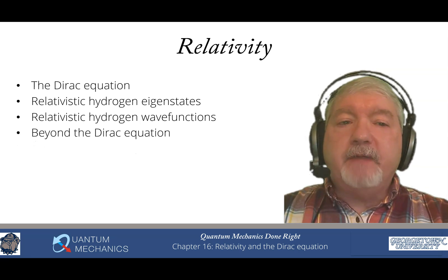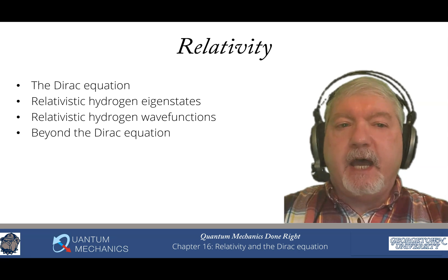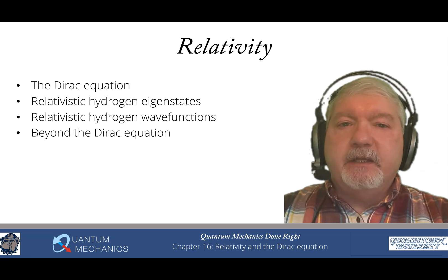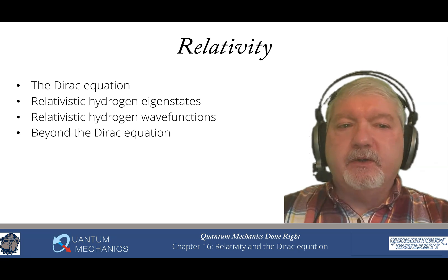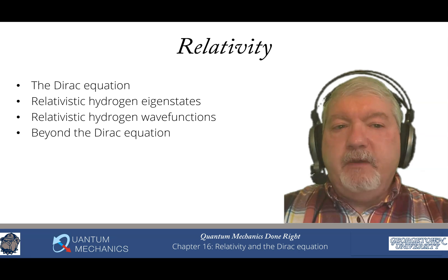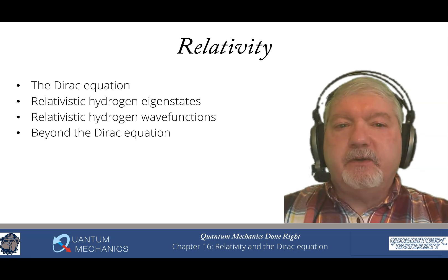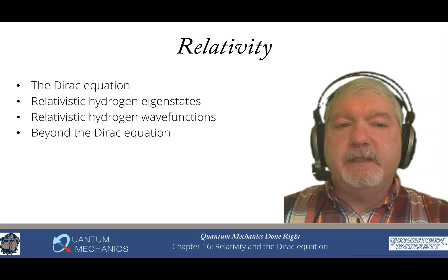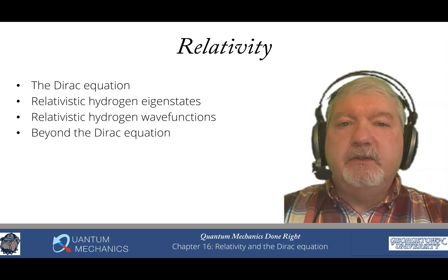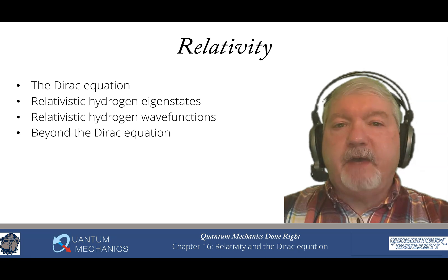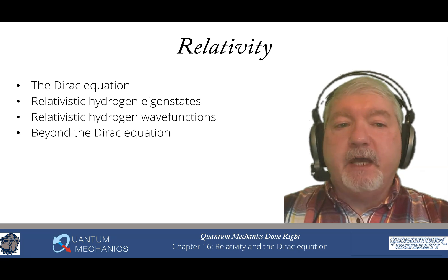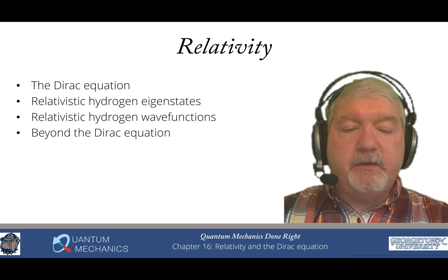After all of that's done, we discuss what the Dirac equation does not include because there are interesting things not in the Dirac equation. This includes the Lamb shift and the so-called g-2 effects. These are quantum electrodynamic effects primarily that cause renormalizations of energies due to interactions of the system essentially with vacuum fluctuations from the quantization of photons and the fact that photons interact with matter.